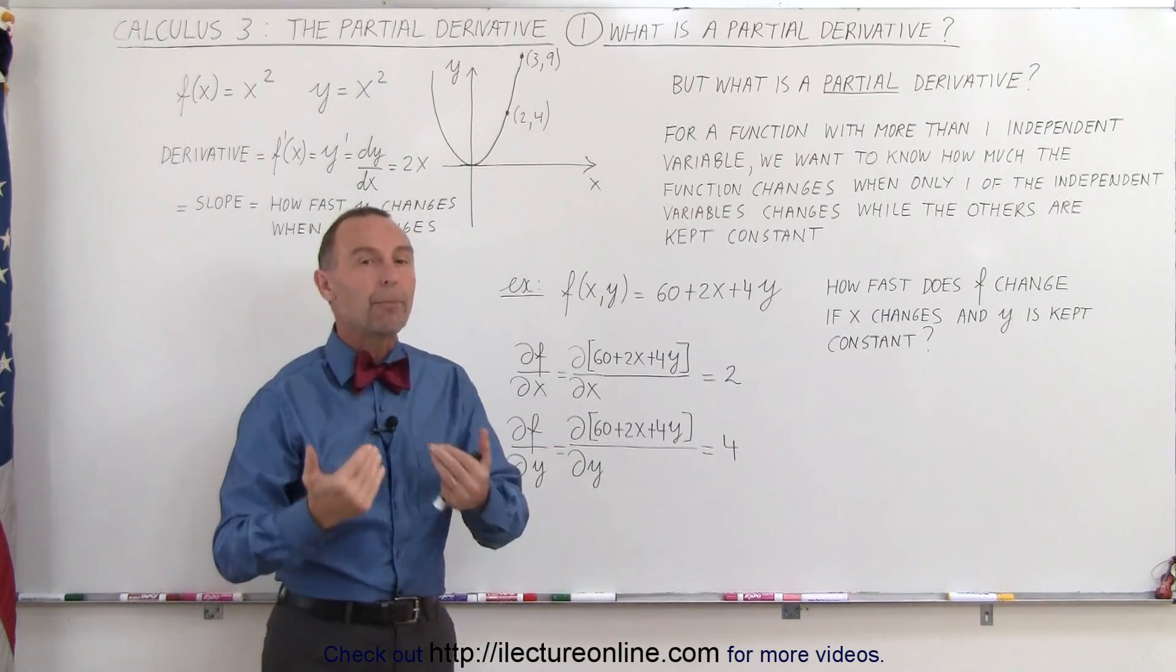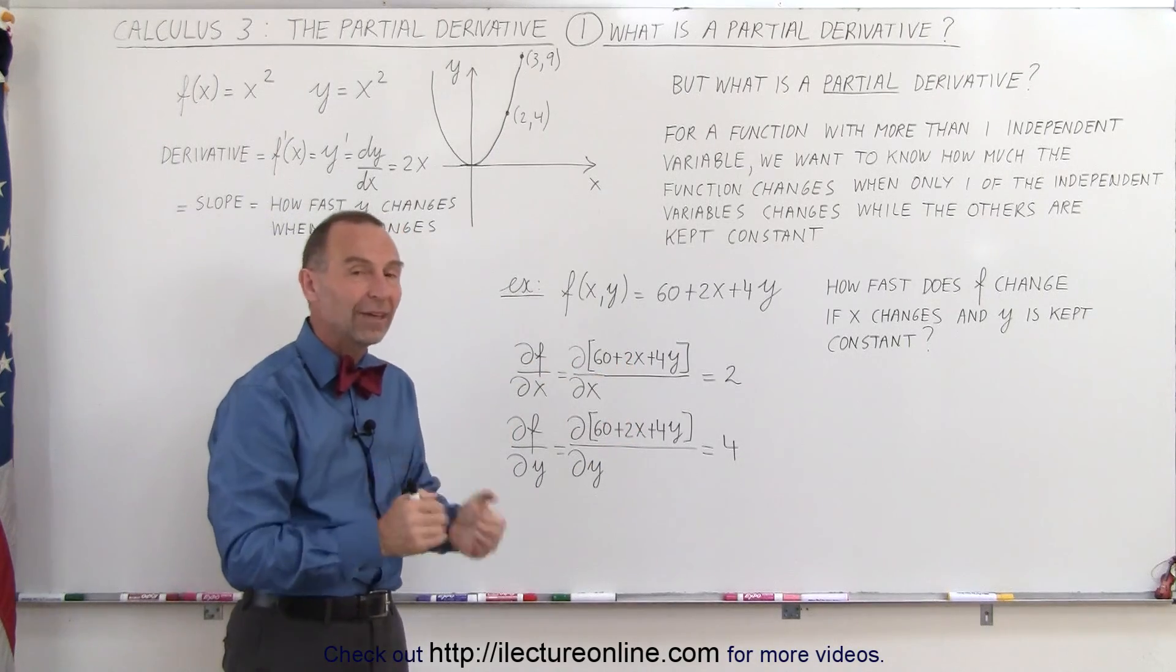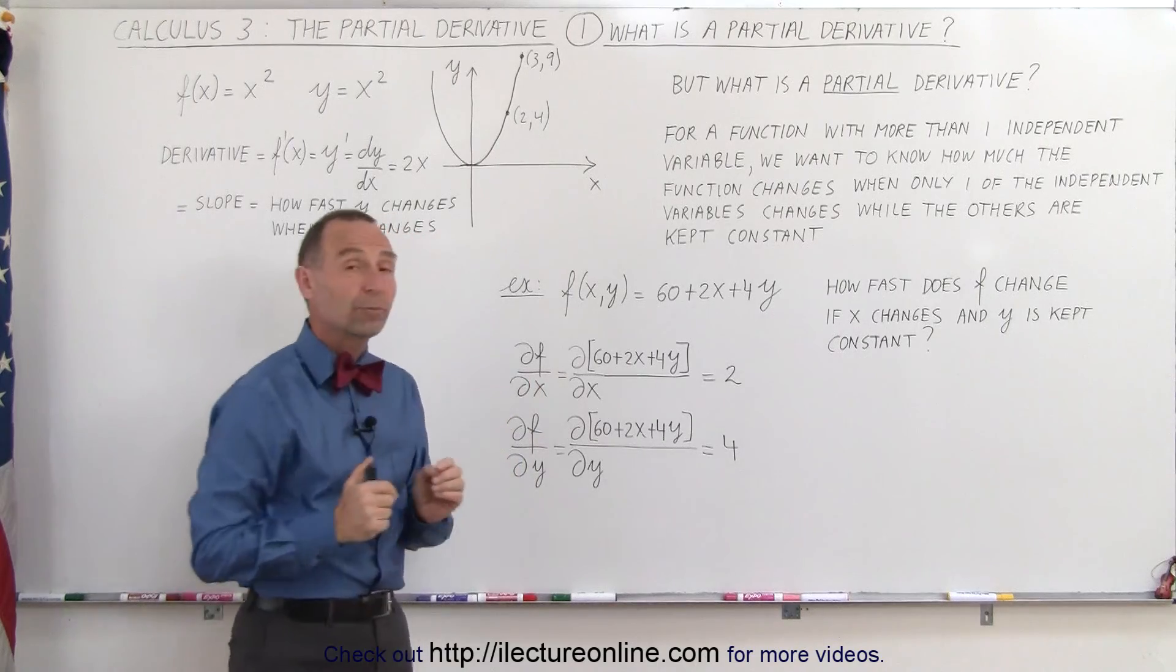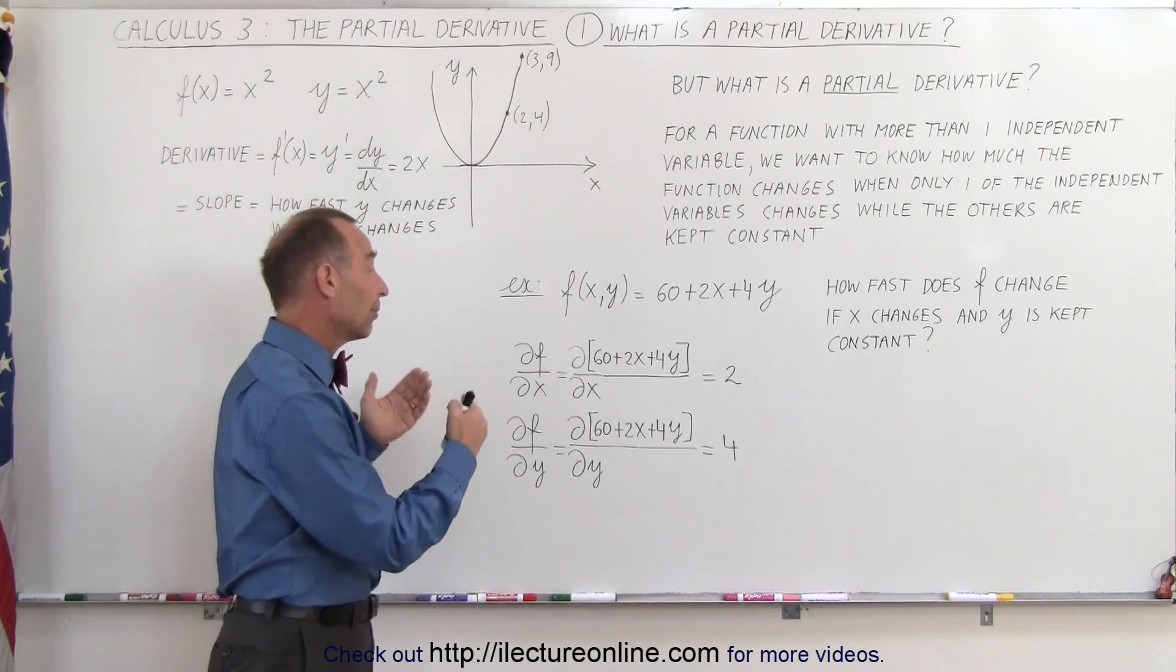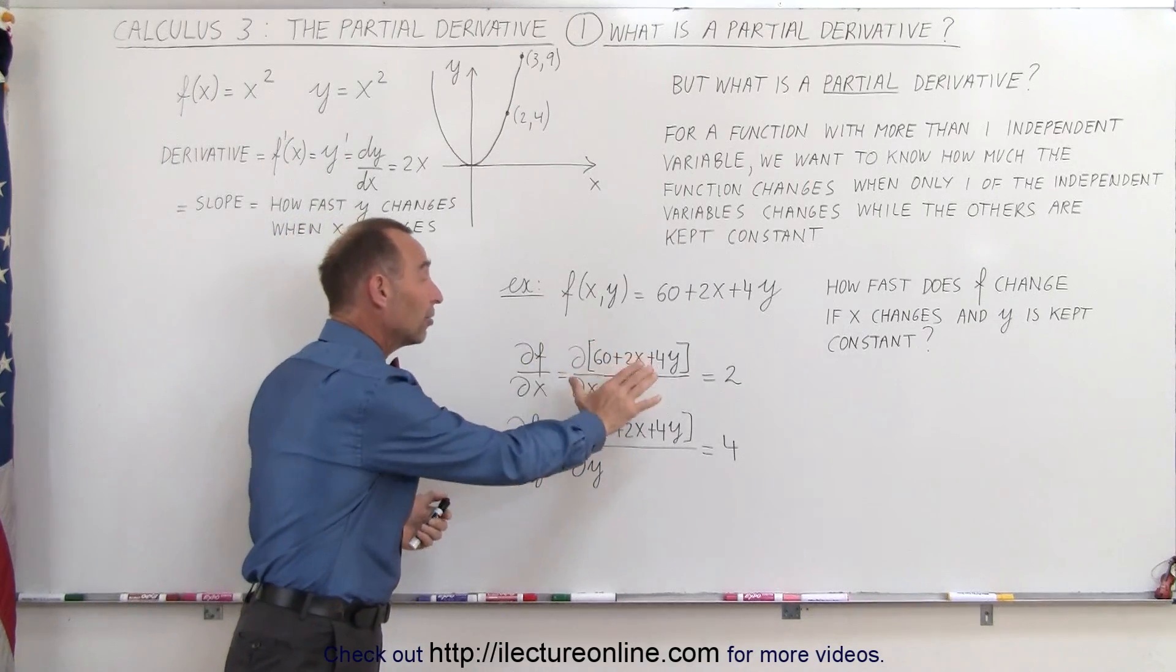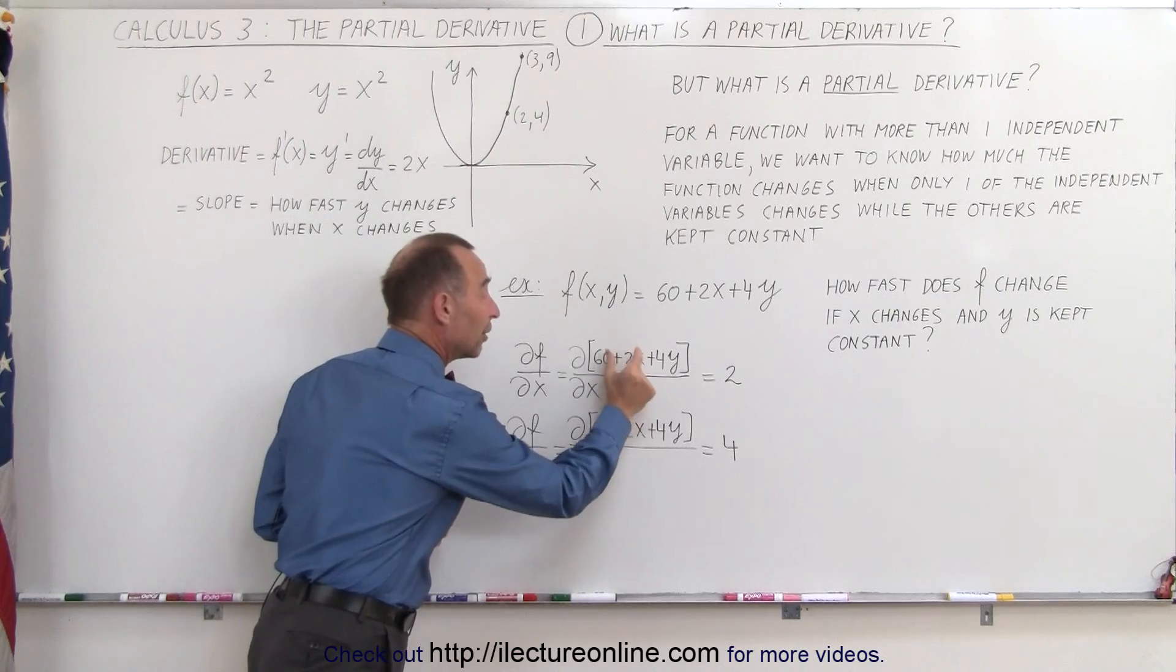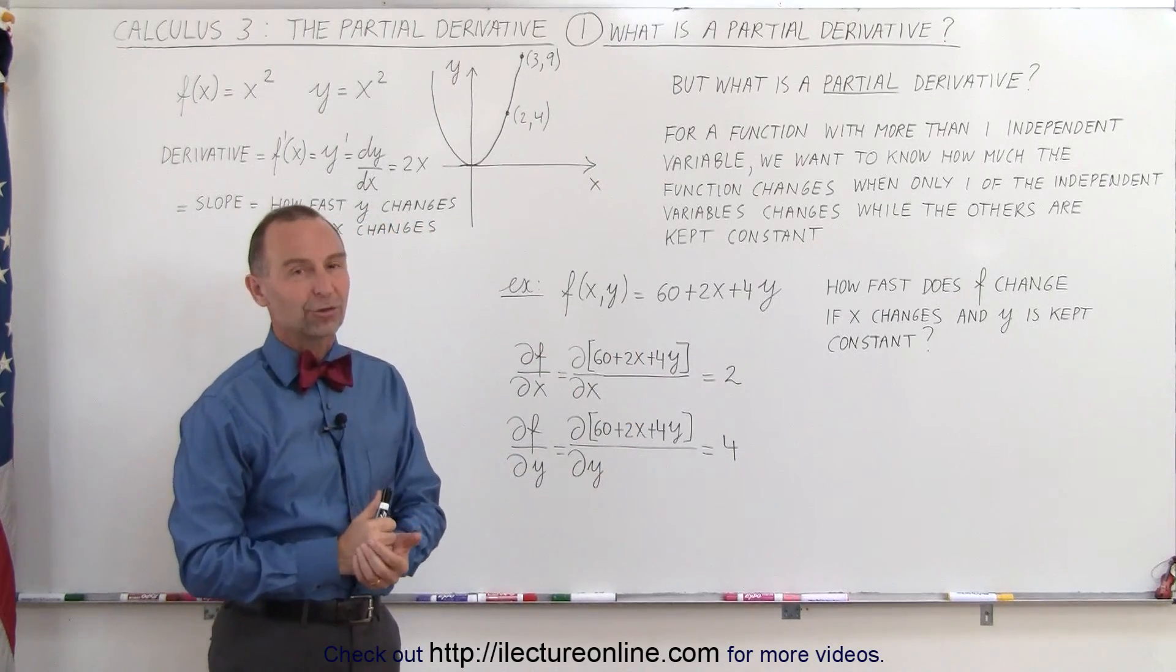That's what we mean by a partial derivative. We simply keep all the other independent variables constant and only allow the one variable—the one with respect to which we take the derivative—to change. Then it becomes very simple: we keep everything constant, the derivative of a constant is 0, and we only take the derivative of the variable that actually changes. That's what we mean by a partial derivative.